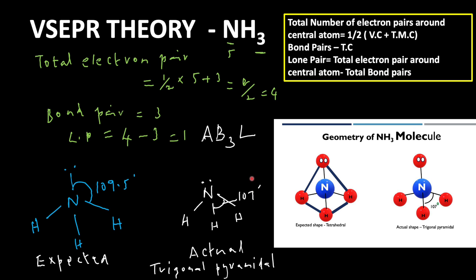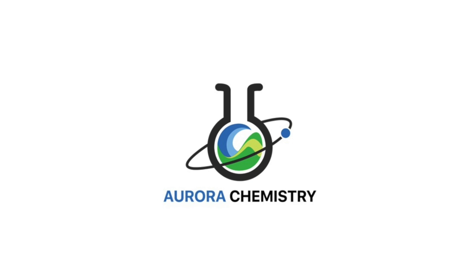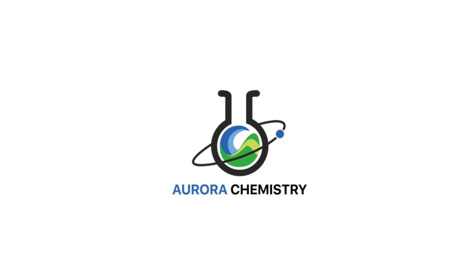In summary, for the NH3 molecule: molecular type is AB3L, total electron pairs around the central atom is 4, bond pairs is 3, and lone pair is 1. The electron pair arrangement is tetrahedral, but the actual molecular shape is trigonal pyramidal. Thanks for watching — see you next time.